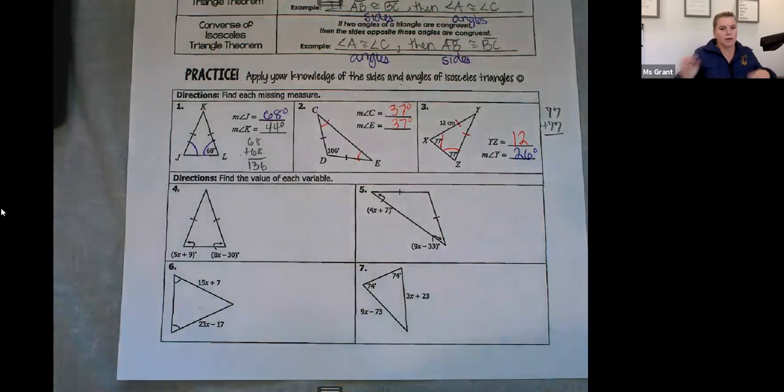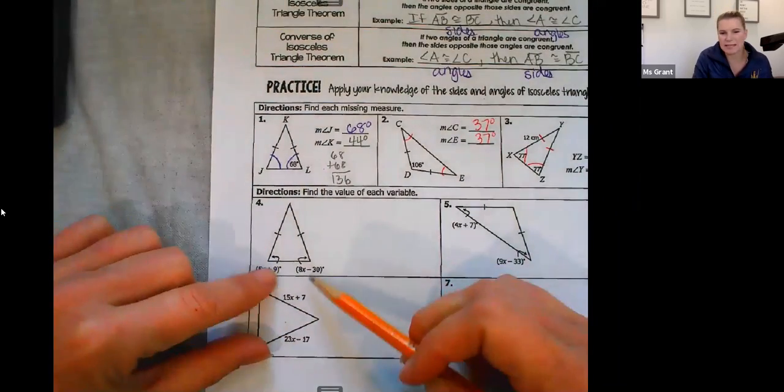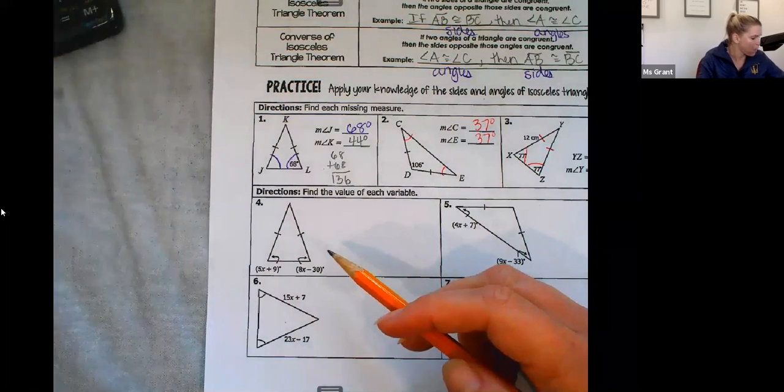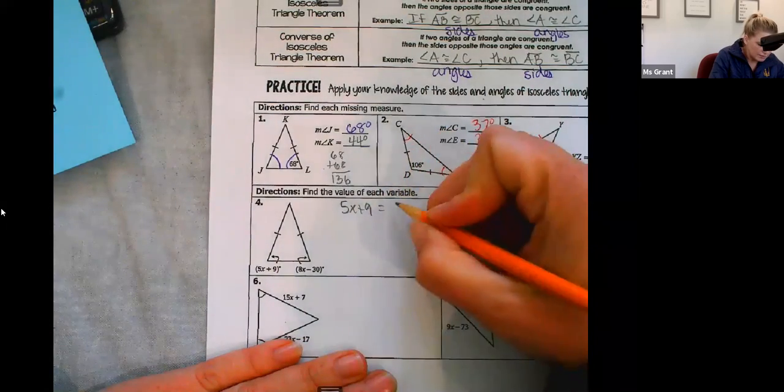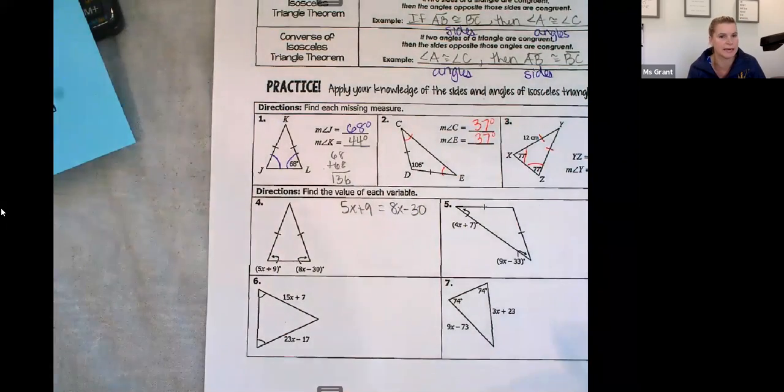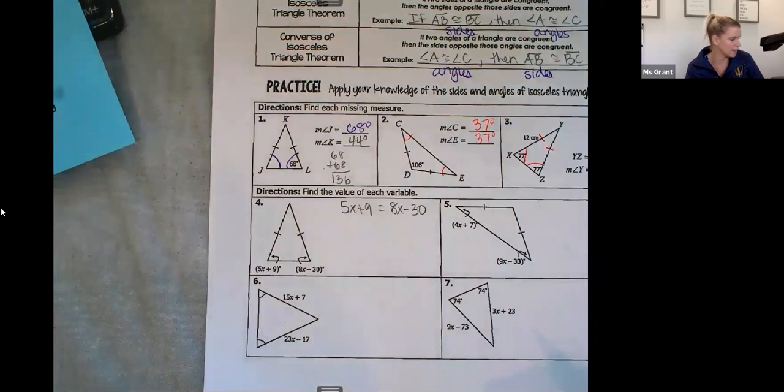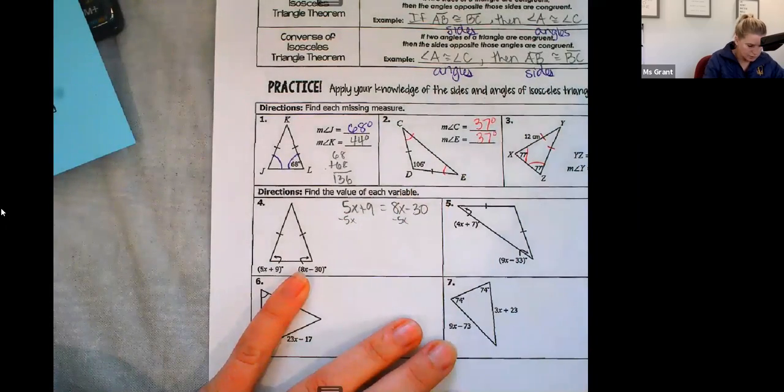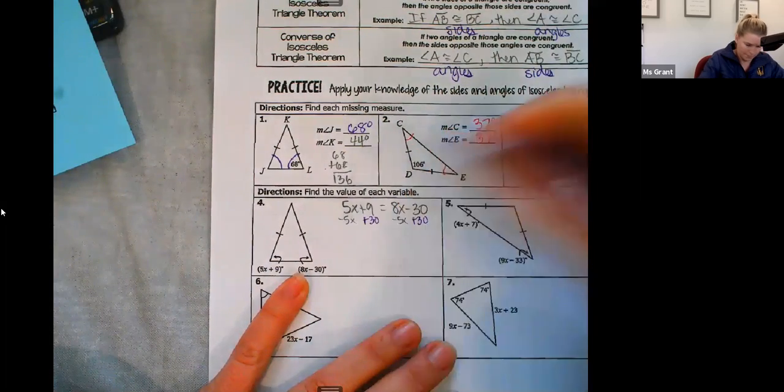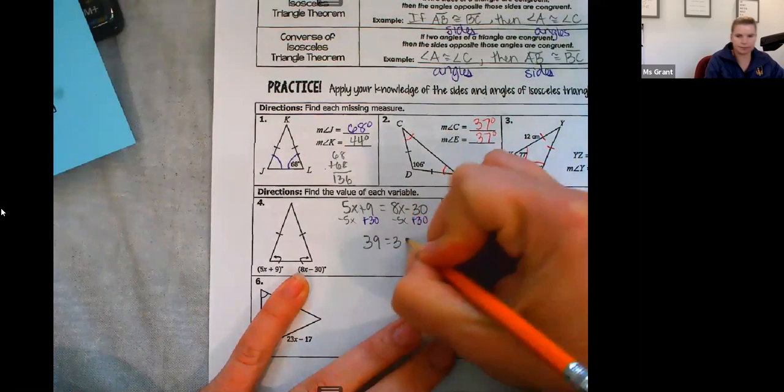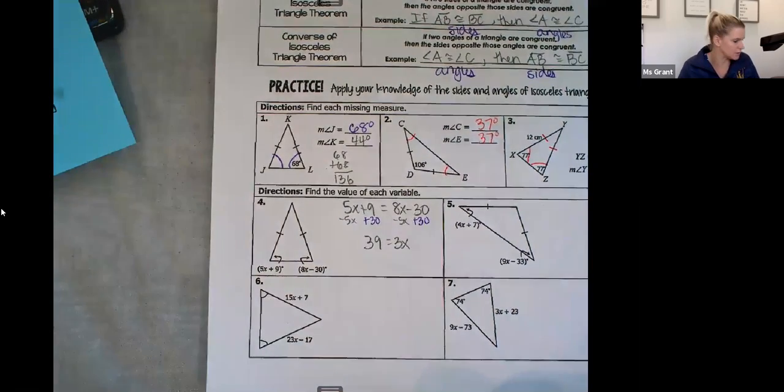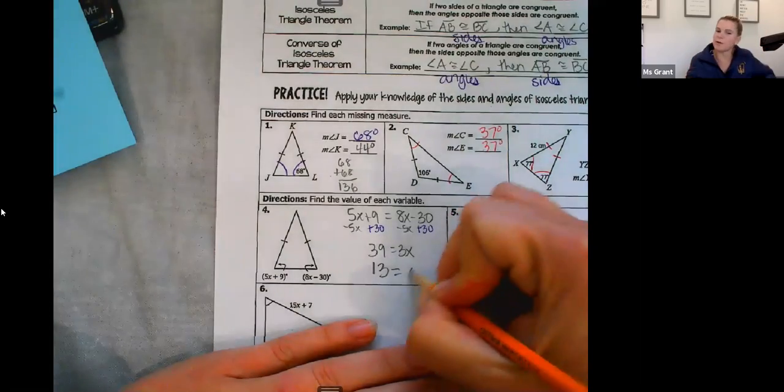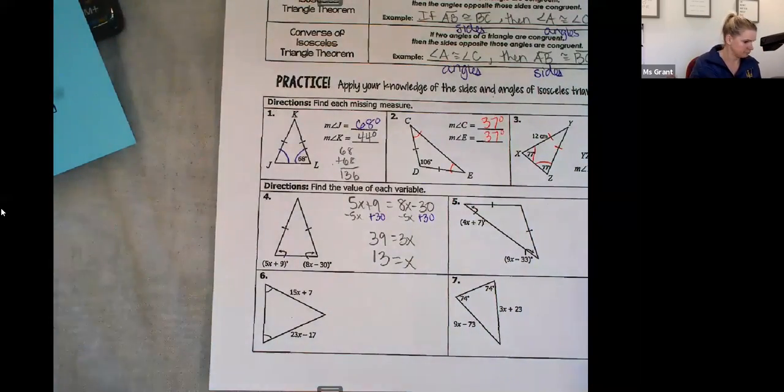Now, 4, 5, 6, and 7 are all talking about isosceles triangles still. So I need to solve for X in these cases. A lot of times they're going to be equal to each other. These two are base angles. They're equal to each other. 5X plus 9 equals. You set them equal to each other because they're the base angles, and base angles are congruent in an isosceles triangle. I can do two steps at a time. 39 equals 3X. Divide three by both sides. 13 equals X. So that's good.